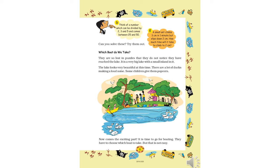One puzzle is: think of a number which can be divided by 2, 3, and 5 and comes between 25 and 50. Last class I had already explained that — the number must be divisible by 2, also by 3, also by 5, all at the same time. The clue is it will be between 25 and 50. The common number is: 2×15=30, 3×10=30, 5×6=30. So 30 is between 25 and 50 and is divisible by 2, 3, and 5.